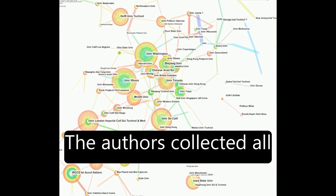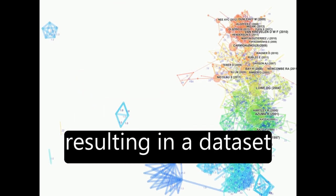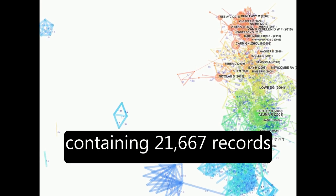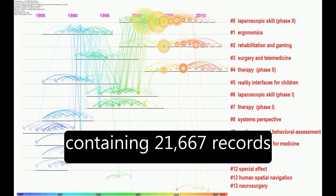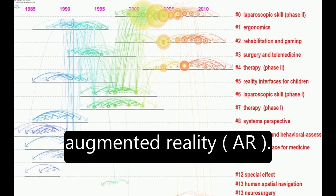The authors collected all existing articles about VR from the Web of Science Core Collection scientific database, resulting in a dataset containing 21,667 records for VR and 9,944 for augmented reality AR.